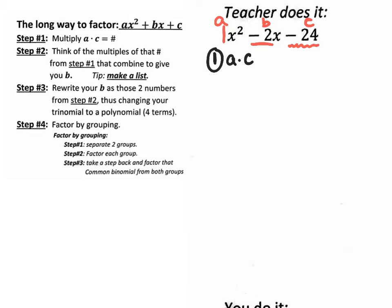Again, your a value is 1, your b value is negative 2, your c value is negative 24. So when you do multiply a times c, you do get negative 24. So negative 24 is the answer to step 1.